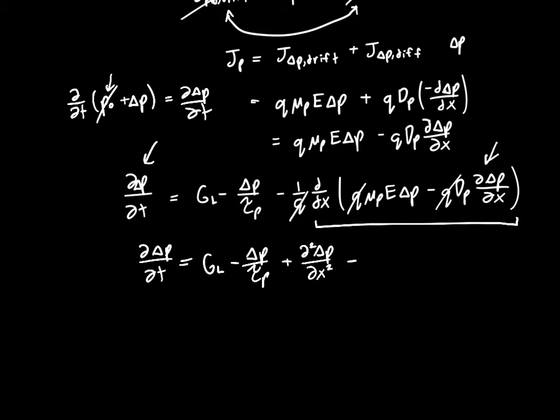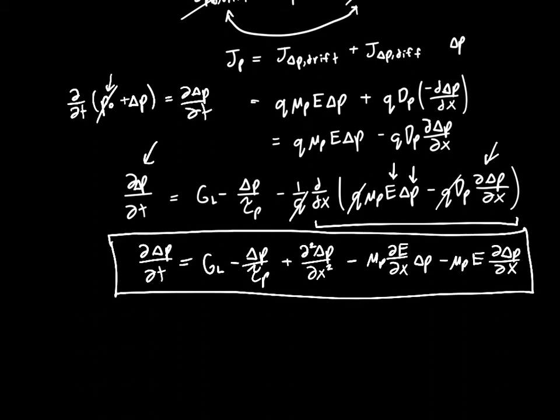Now in the second term, remember that E might be a function of x and delta p might be a function of x, so we have to use the product rule to expand this. When we do that, we'll get minus mu p times derivative of the electric field with respect to x times delta p, minus mu p times the electric field times the derivative of the concentration with respect to x.